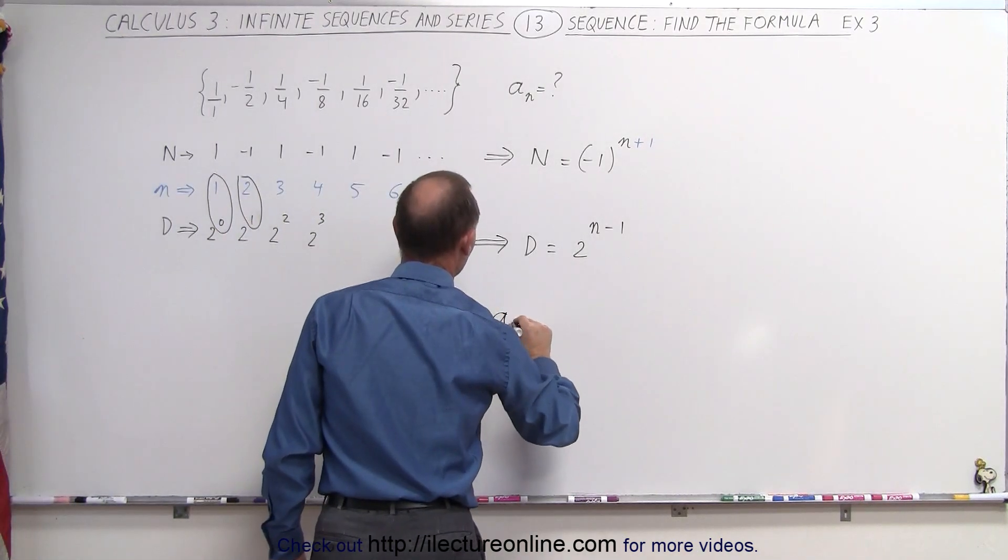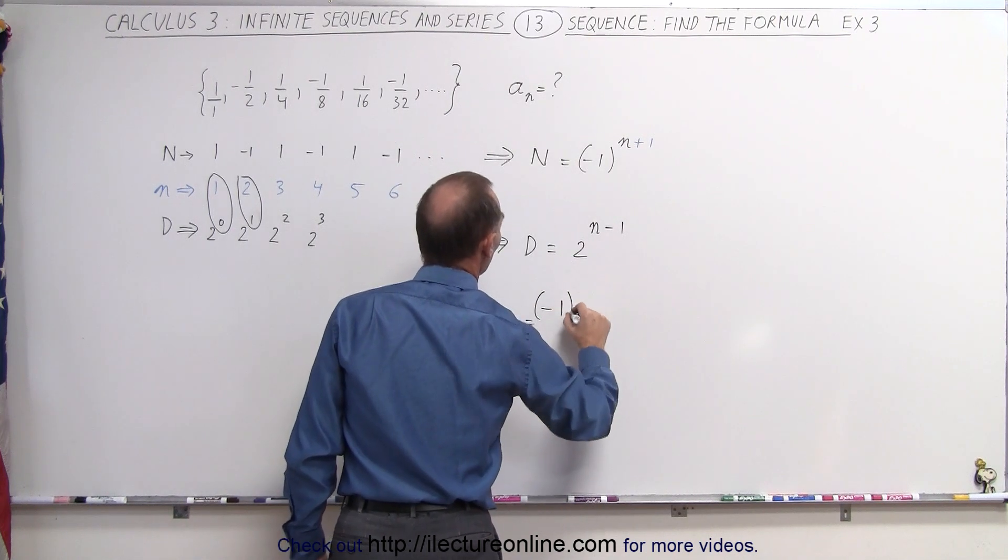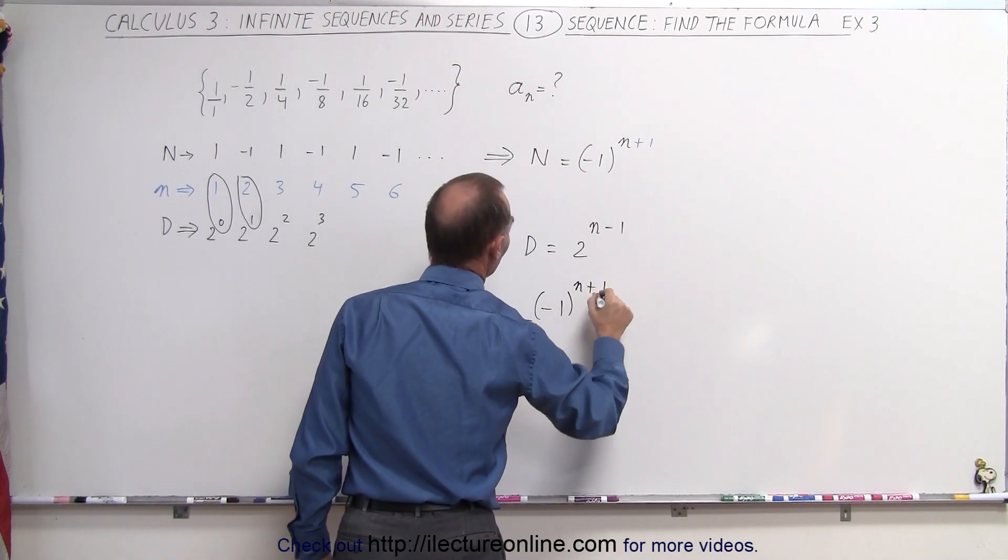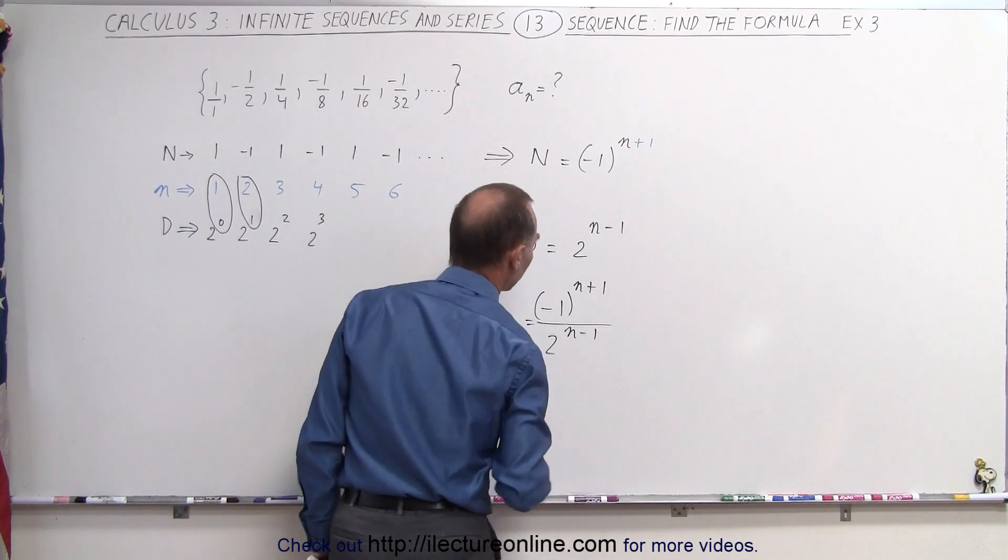which means that a sub n can be written as the numerator, being minus one raised to the n plus one power, divided by two raised to the n minus one power.